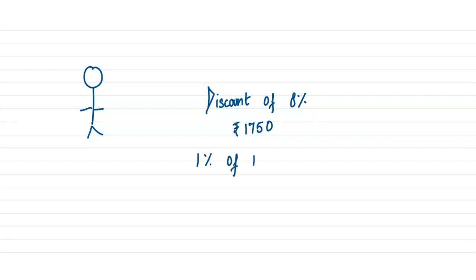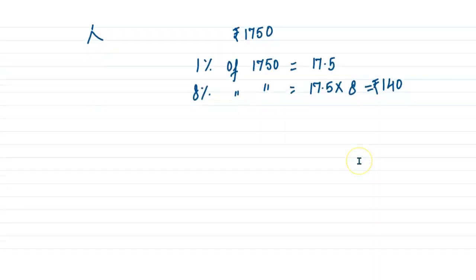Again I can find out 1% of 1750, which will be equal to 17.5. So 8% of 1750 will be 17.5 into 8, which is equal to 140.